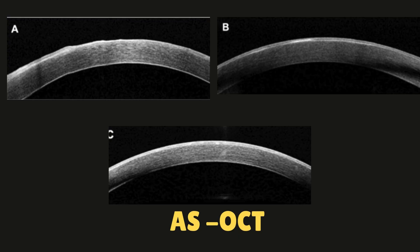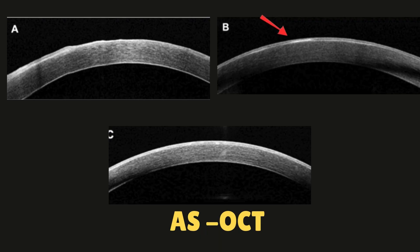Diagnosing EBMD is straightforward based on clinical features. You can also carry out an anterior segment OCT. In the first image, you can see irregular and thickened epithelial basement membrane with duplication associated with undulation and elevation of the corneal epithelial layer. The second picture shows a thickened hyperreflective basement membrane, and the third shows hyperreflective dots in the middle of the corneal epithelial layer.